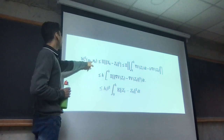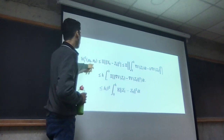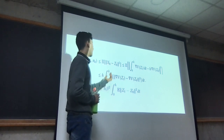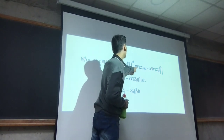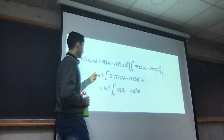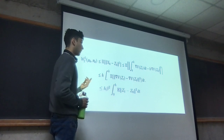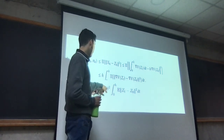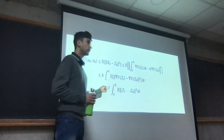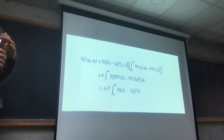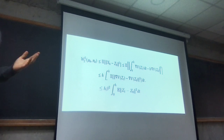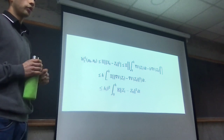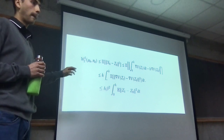Now we estimate the Wasserstein distance, which by definition is less than or equal to the expected value of the square norm of x_h minus z_h. By elementary computation it is bounded by this quantity, and since the gradient is Lipschitz with constant beta, we have h times beta squared and this additional term. Note that x_h and z_h give a feasible coupling but not necessarily an optimal one — later we will assume optimal couplings when bounding for more steps. This estimate is just for k equal to 1.